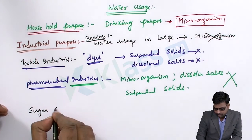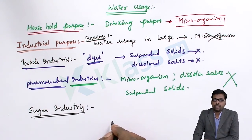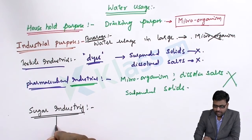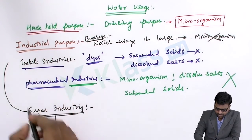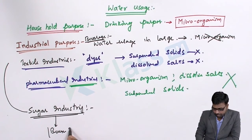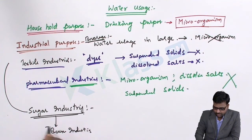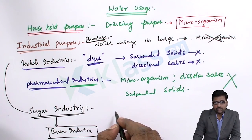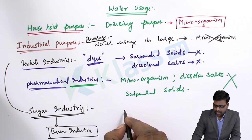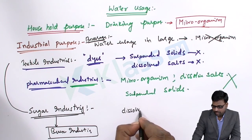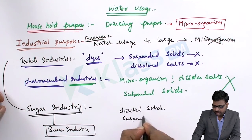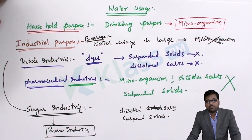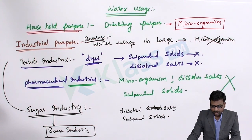In the sugar industry, water is used for cleaning as well as for the formation of molasses, which in turn interacts with beverage industries — most beverage industries depend on nearby sugar factories. Even for the removal of color from sugar, water is used as a cleaning material, so that water should also not contain dissolved solids or suspended particles. These are the main usages of water — most water is used industrially as well as for household purposes.